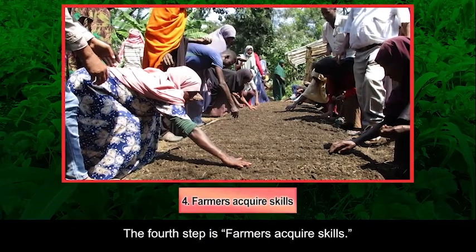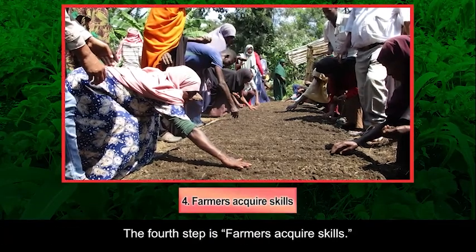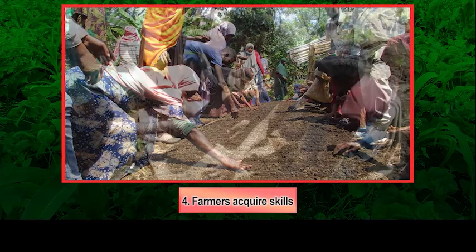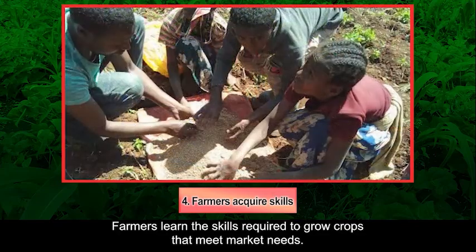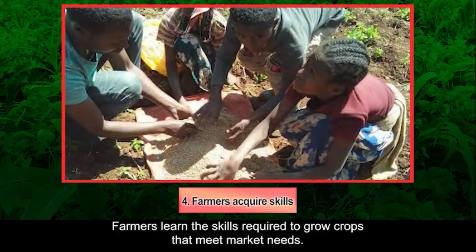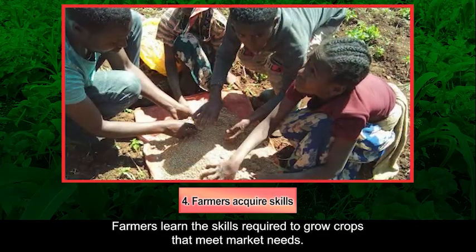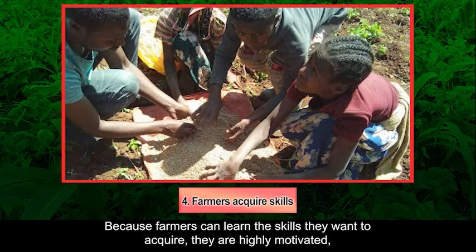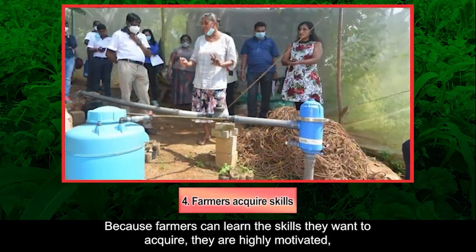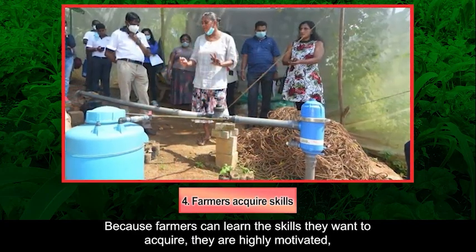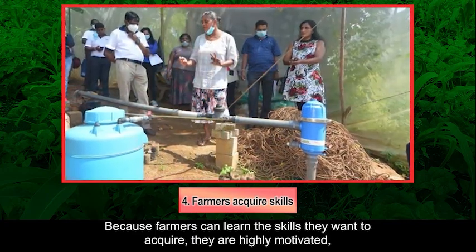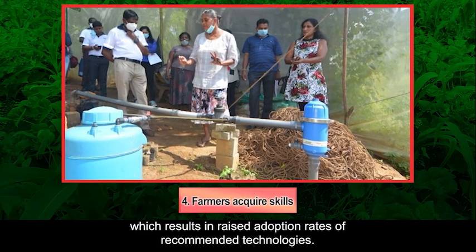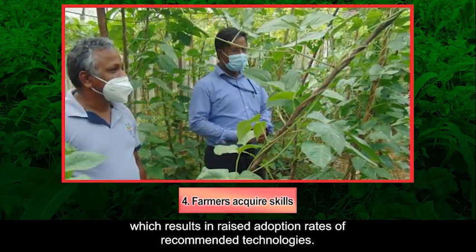The fourth step is farmers acquire skills. Farmers learn the skills required to grow crops that meet market needs. Because farmers can learn the skills they want to acquire, they are highly motivated, which results in raised adoption rates of recommended technologies.